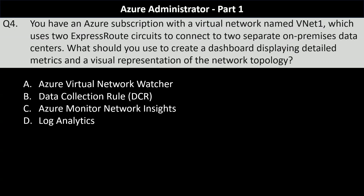Next question. You have an Azure subscription with a virtual network named VNet1 which uses two ExpressRoute circuits to connect to two separate on-premise data centers. What should you use to create a dashboard displaying detailed metrics and a visual representation of the network topology? Your options are Azure Virtual Network Watcher, Data Collection Rule, Azure Monitor Network Insights, or Log Analytics. The most appropriate choice is option C, Azure Monitor Network Insights.